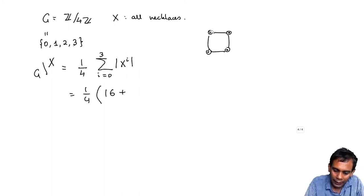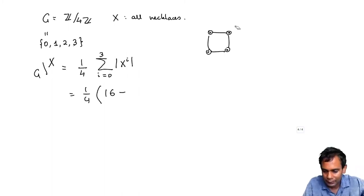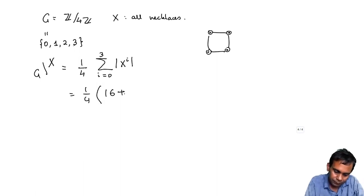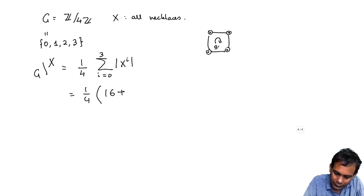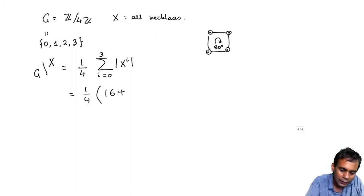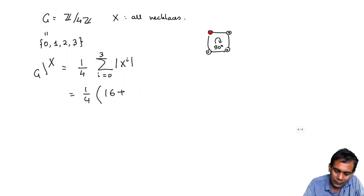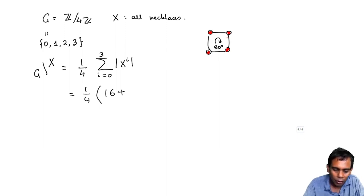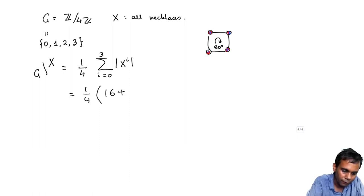For i = 1, that is clockwise rotation by 90 degrees: if this bead is colored red, then after rotating 90 degrees it moves to the next position, which must also be red, and so on around the necklace. So all beads have to be the same color. There are only 2 choices: all red or all blue. So we get 2 for i = 1.